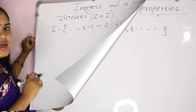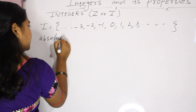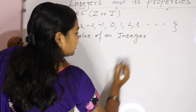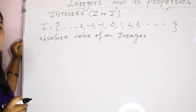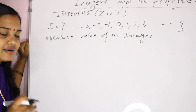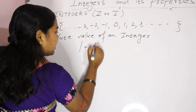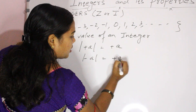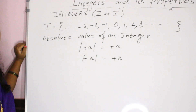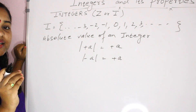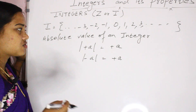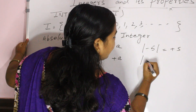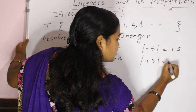Next, let us understand about the absolute value of an integer. The absolute value of an integer is its numerical value regardless of its sign. The absolute value of a positive A is positive A, and the absolute value of negative A is also positive A. For example, the absolute value of minus five is plus five, and the absolute value of plus five is also plus five.